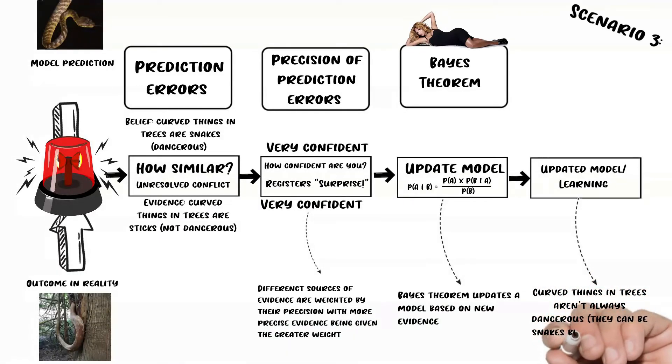To summarize, our brain experienced this mismatch between expecting a snake and experiencing a stick. So it sent off an alarm bell saying that we're really sure that this stick is not a snake, and we updated our models that we don't always need to be scared when we come across a curved thing in a tree because sometimes curved things in trees are just sticks.